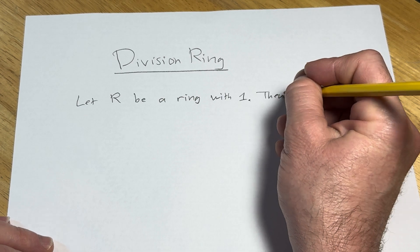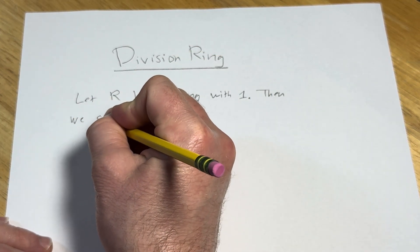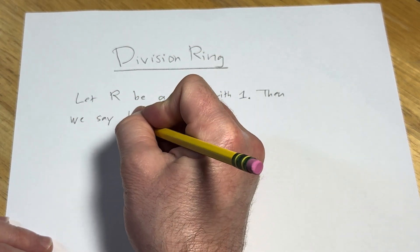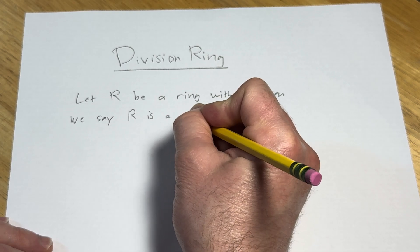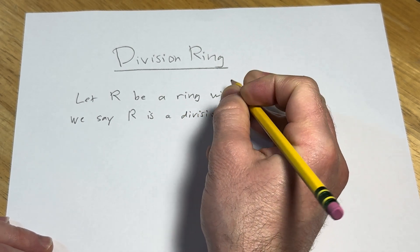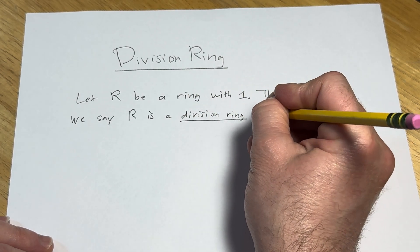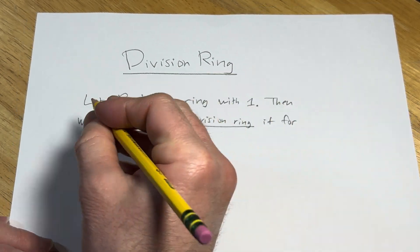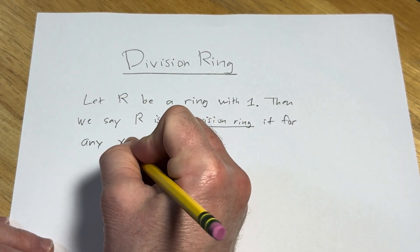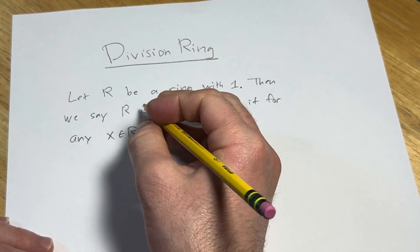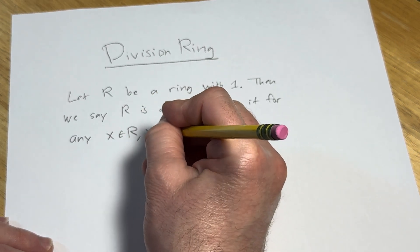We say R is a division ring if for any x in R, x not equal to 0,